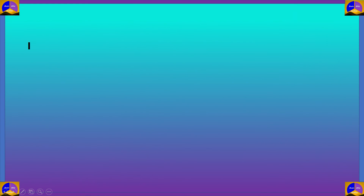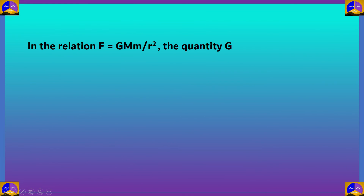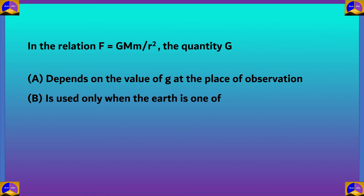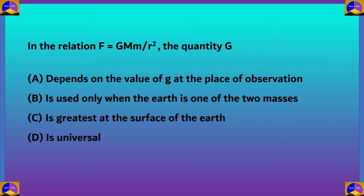Next question: in the relation F = G·M·m / r², what are the qualities of the quantity G? The options are: A) depends on the value of g at the place of observation; B) is used only when the Earth is one of the two masses; C) is greatest at the surface of the Earth; D) is a universal constant of nature. This formula comes from the universal law of gravitation, which states that the gravitational force between two objects is directly proportional to the product of their masses.